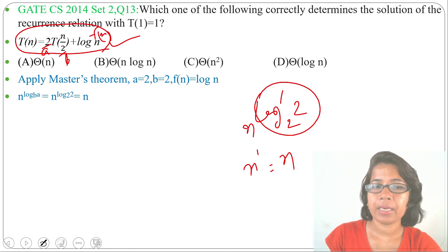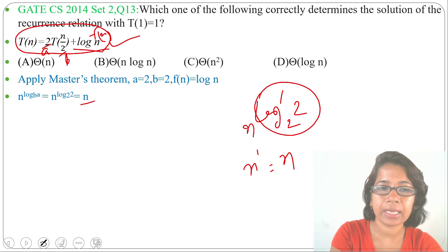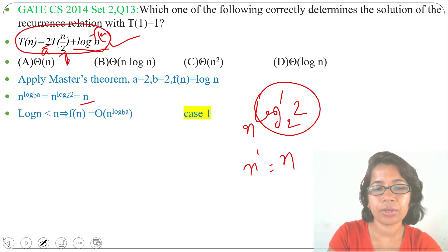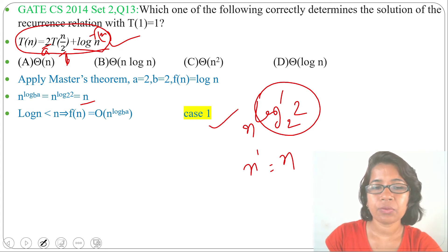Next, compare f(n) with n^(log_b a). f(n) is log n and n^(log_b a) is n. Since log n is less than n, we can say f(n) = O(n^(log_b a)). This falls under Case 1 of the master theorem.